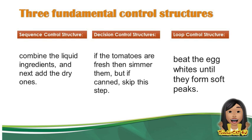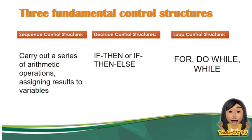In short, if you are using the loop control structure, the process just repeats over and over. In programming, the sequence control structure carries out a series of arithmetic operations or assigns a value to a variable. When you use if-then, if-else, or switch, that is the decision control structure — the result is always true or false, and each has its corresponding function. For the loop control structure, you use 'for', 'do-while', or 'while loop' — meaning the process repeats.